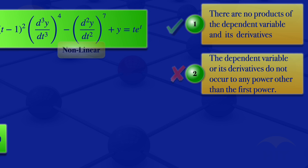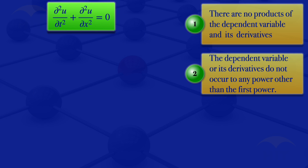Moving to the next equation, we have a partial differential equation because we have partial derivatives: the second partial derivative of u with respect to t plus the second partial derivative of u with respect to x. Here u is a function of two variables, t and x. We see there are no products of the dependent variable u and its derivatives, so condition 1 is satisfied. The dependent variable and its derivatives also do not occur to any power other than the first, satisfying condition 2. So this is a linear partial differential equation.